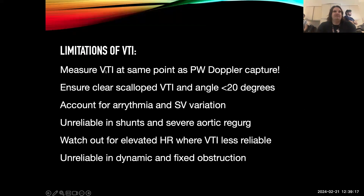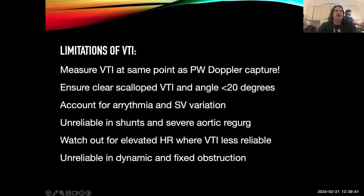Limitations of VTI: you have to measure VTI at the same point as the pulsed wave Doppler capture, and ensure your angle of insonation is less than 20 degrees to the flow. If you have atrial fibrillation, you need to take five measurements and average them, and exclude PVCs. It's unreliable if you have a shunt or severe aortic stenosis. If you have a really high heart rate — 130, 140, 150 — it's less clear what's going on. If you have dynamic or fixed obstruction — systolic anterior motion or aortic stenosis — it's not reliable.